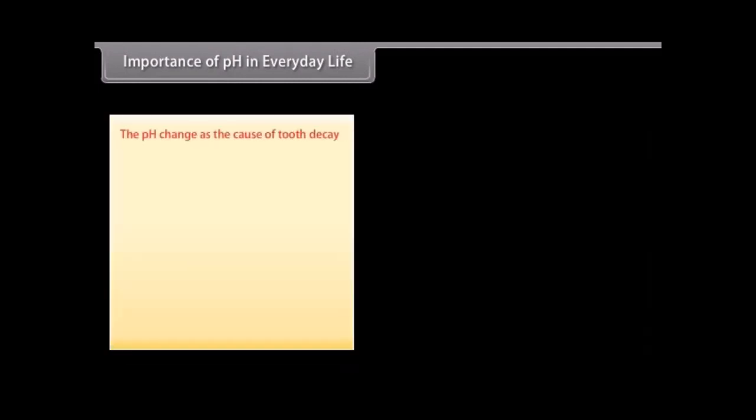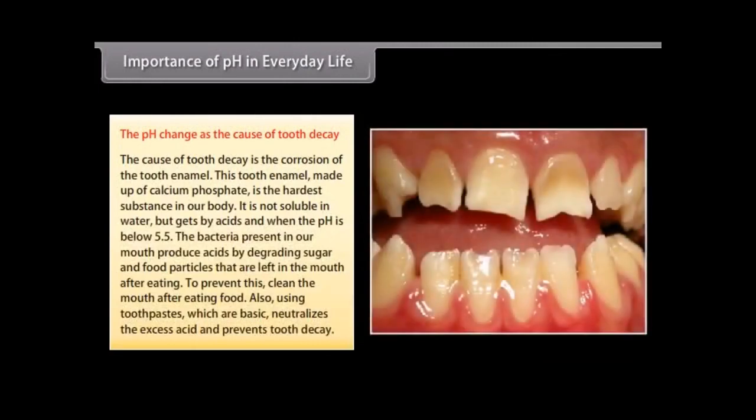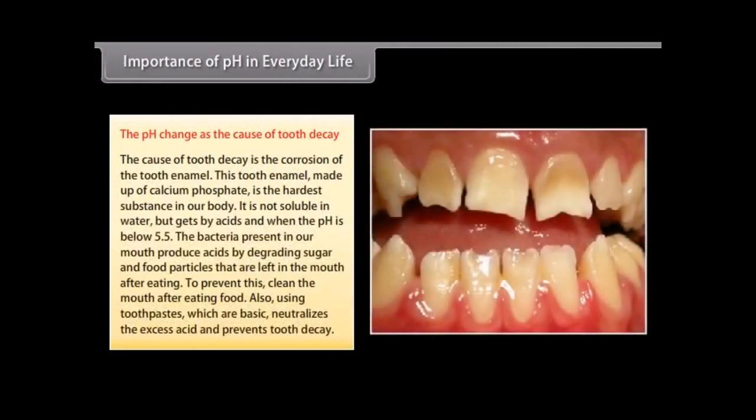The pH change as the cause of tooth decay. The cause of tooth decay is the corrosion of the tooth enamel. This tooth enamel made up of calcium phosphate is the hardest substance in our body. It is not soluble in water but gets by acid when the pH is below 5.5. The bacteria present in our mouth produce acids by degrading sugar and food particles that are left in the mouth after eating. To prevent this, clean the mouth after eating food. Also, using toothpastes which are basic neutralizes the excess acid and prevents tooth decay.